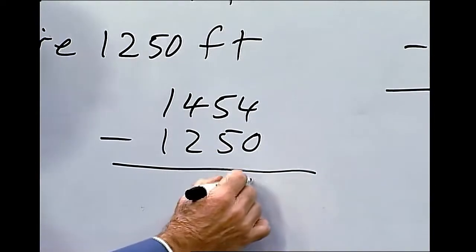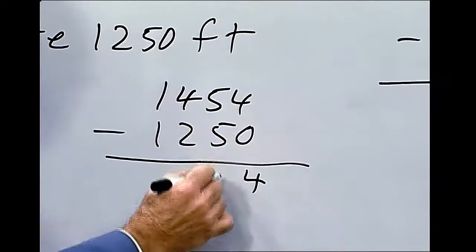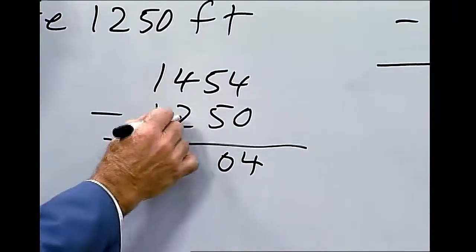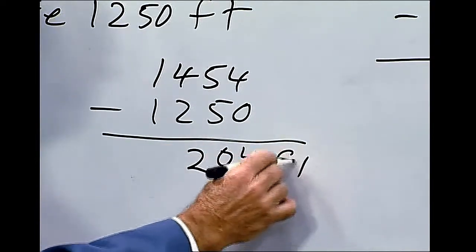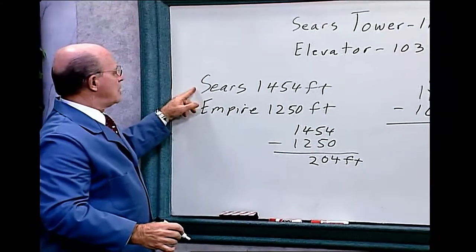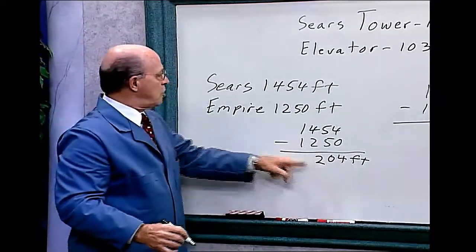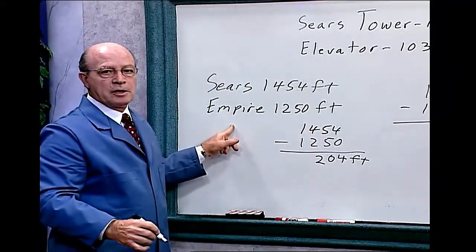Zero from four is four. Five from five is zero. Four minus two is two. So the Sears Tower is 204 feet taller than the Empire State Building.